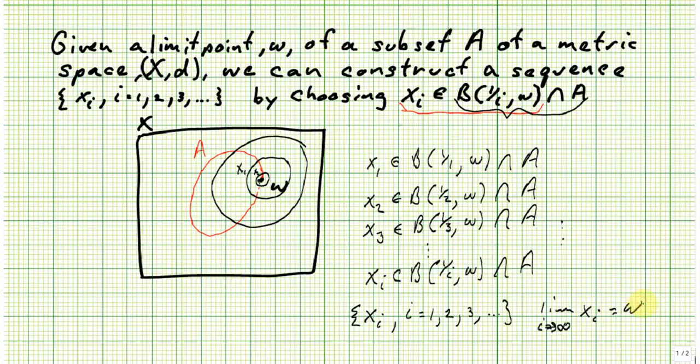Now, there's one small caveat here, and that is, in each case, I have to choose something other than w, because I don't want to actually end up accidentally constructing the constant sequence. So, I really should, on each of these, I should put minus w,